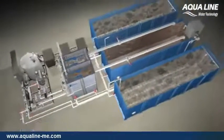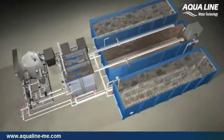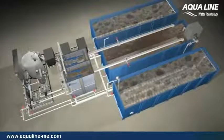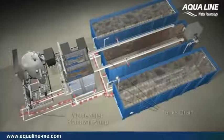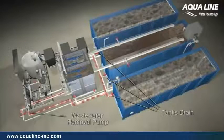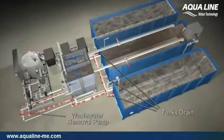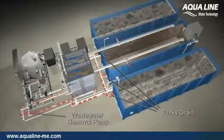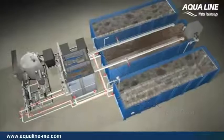Excess biomass or sludge generated from the biological treatment process will be wasted on a periodic basis. To maintain the desired solids' concentration within the system, sludge is withdrawn from the bioreactor tanks or membrane tank for proper off-site disposal by licensed haulers.